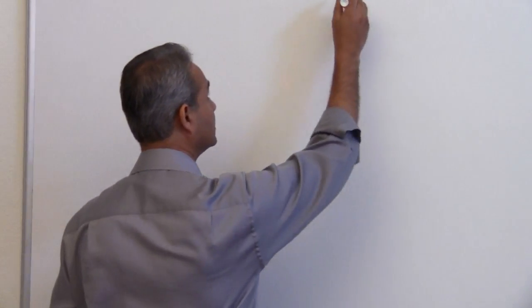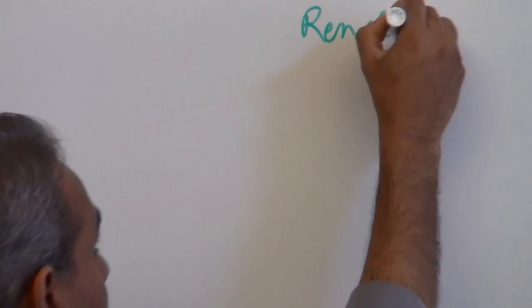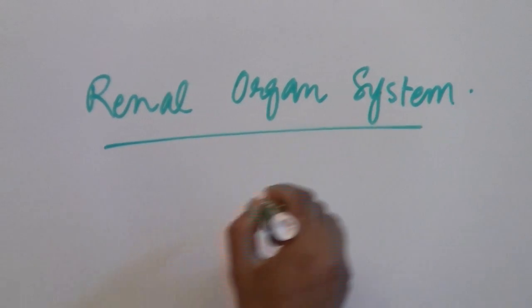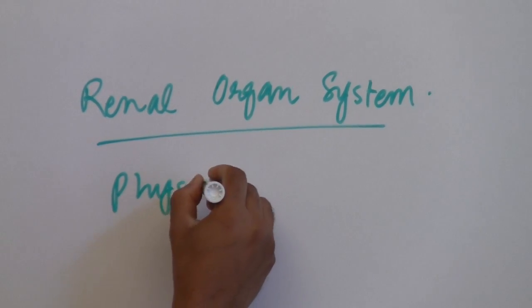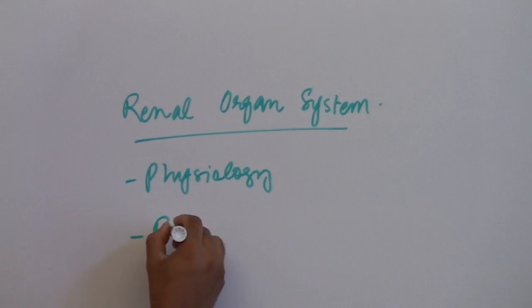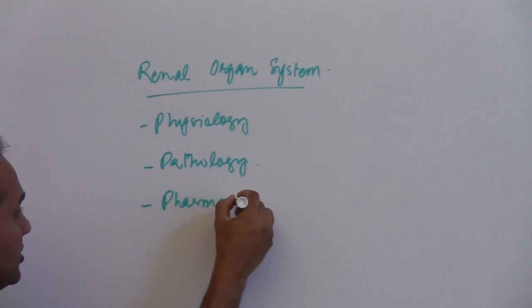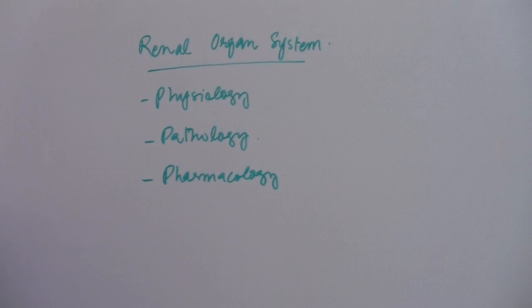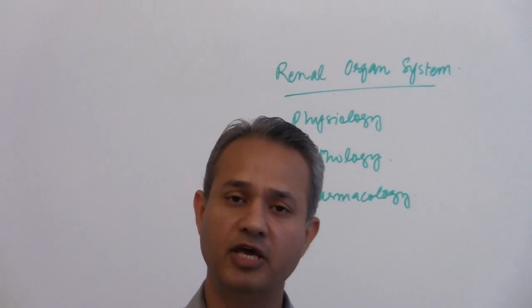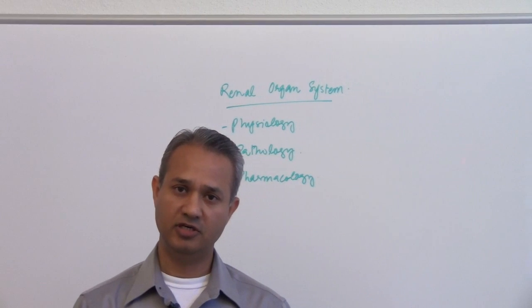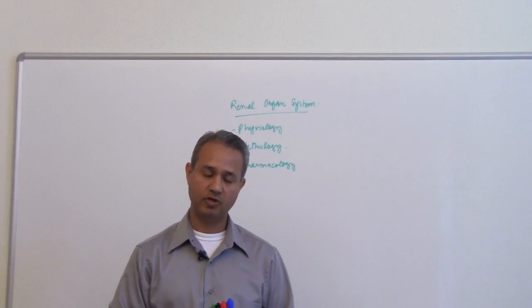So without further delay, let's start talking about the body volumes or the compartments. This is really part of the renal organ system. What we will do is we'll do physiology, then we'll do pathology of the kidneys or the renal system, and then we'll do pharmacology. So I am hoping that within 10 hours of lectures one organ system will be taken care of. We have about 11 organ systems to study. So about 110 hours and we would be done with the physiology, pathology, and pharmacology of various organ systems.